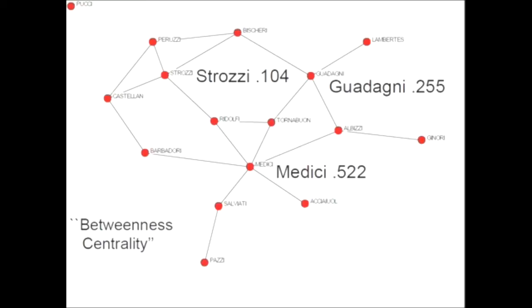This is ex-post historical interpretation, but the graph tells us about positions of certain nodes and helps us understand a historical event. Betweenness centrality is important in a world where you have to broker deals and enforce contracts. But it might not be the best measure if you just want to spread information — that could be a very different question with a different measure of centrality.